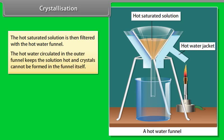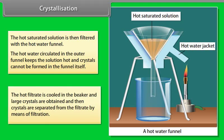The hot saturated solution is then filtered with a hot water funnel. The hot water circulated in the outer funnel keeps the solution hot and crystals cannot be formed in the funnel itself. The hot filtrate is cooled in the beaker and large crystals are obtained. The crystals are then separated from the filtrate by means of filtration.